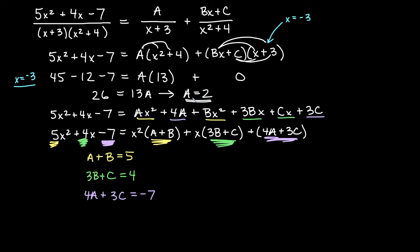So if I want to solve B I think the shortest path to victory is plugging it into the first one. So if I plug in A is 2 into this one that tells me 2 plus B is equal to 5. And if I subtract 2 from both sides that's going to tell me that B is 3.